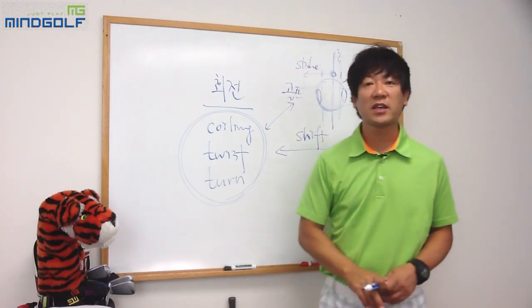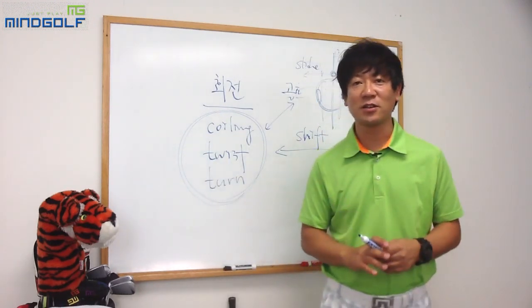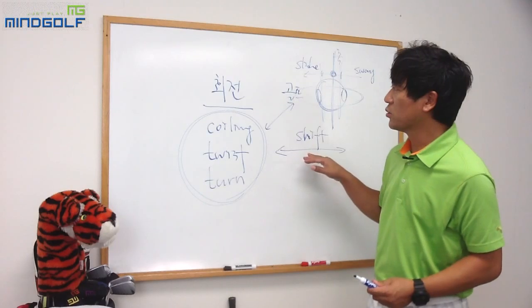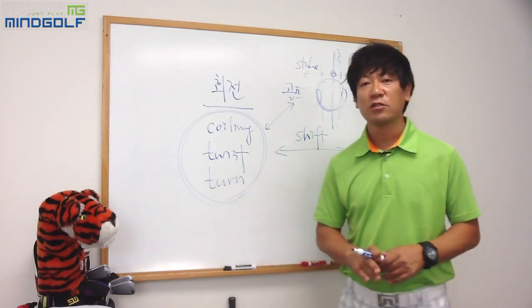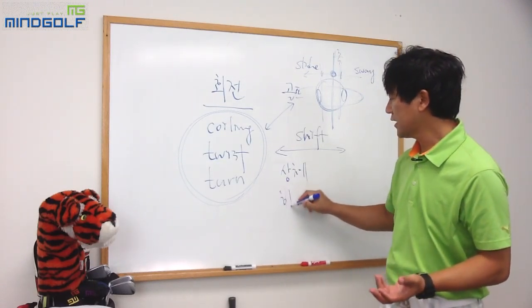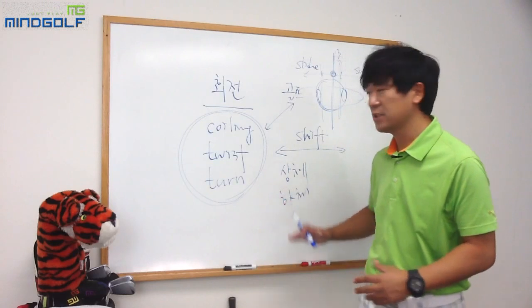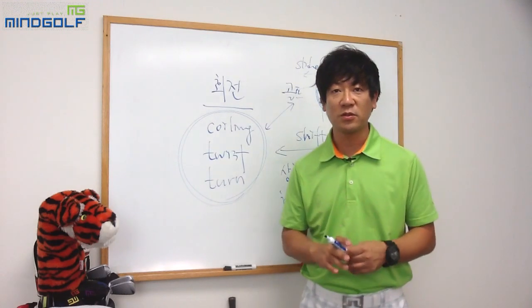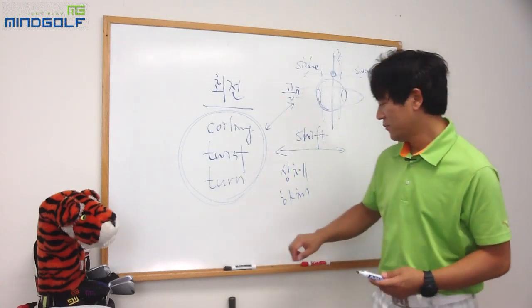골프에서 스웨이 앤 슬라이드는 좋지 않다는 지적을 많이 하죠. 이런 회전 운동에서 몸의 윗부분인 상체와 아랫부분인 하체가 어떤 형태로 움직이는 게 좀 더 효율적이고 비거리에 도움이 되는지, 왜 그렇게 되는지에 대한 원리를 설명해드리겠습니다.